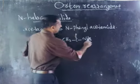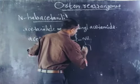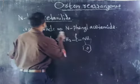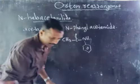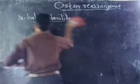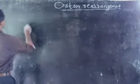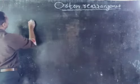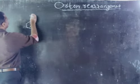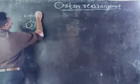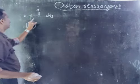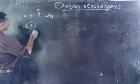Now what is N-phenylacetamide? One hydrogen atom on nitrogen is replaced by a phenyl group. This is N-phenylacetamide, which is known as acetanilide. So acetanilide is N-phenylacetamide, and we can write it as a phenyl ring with NHCOCH3.